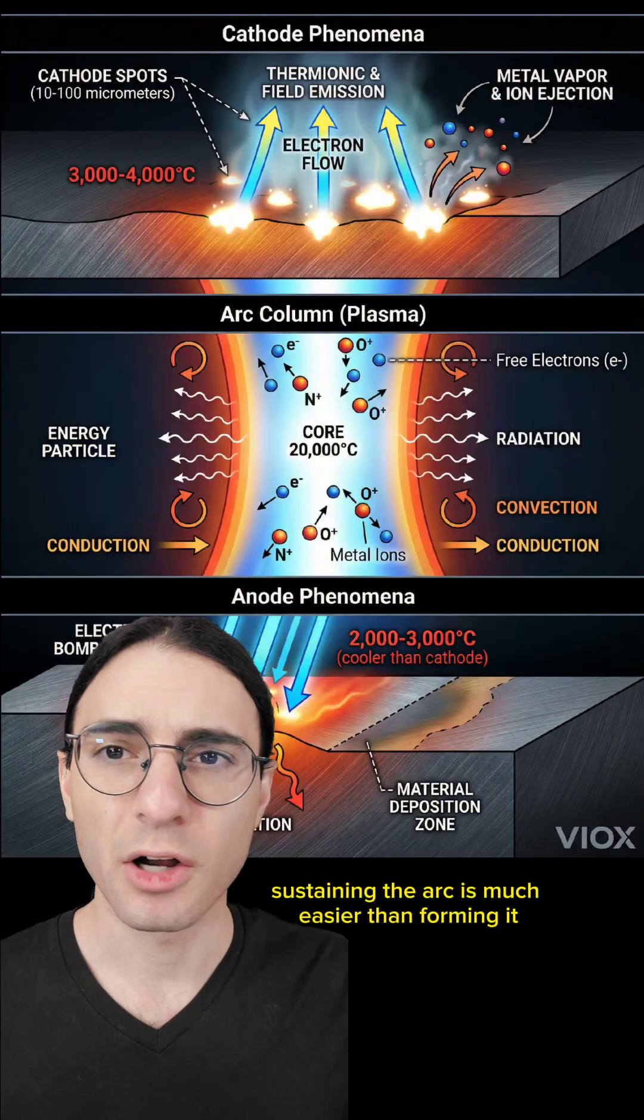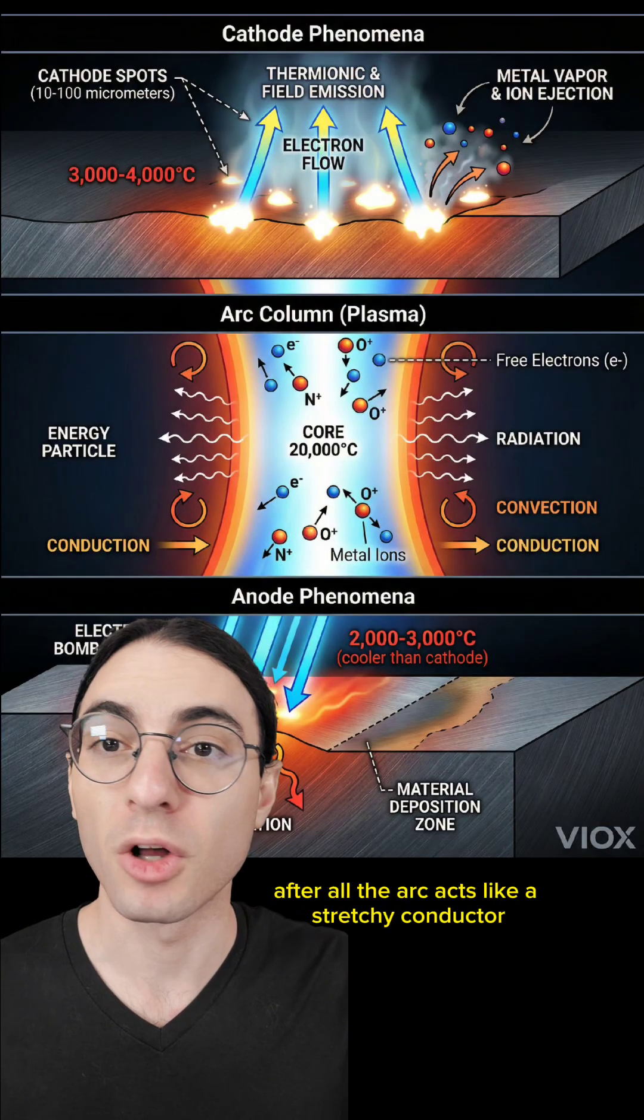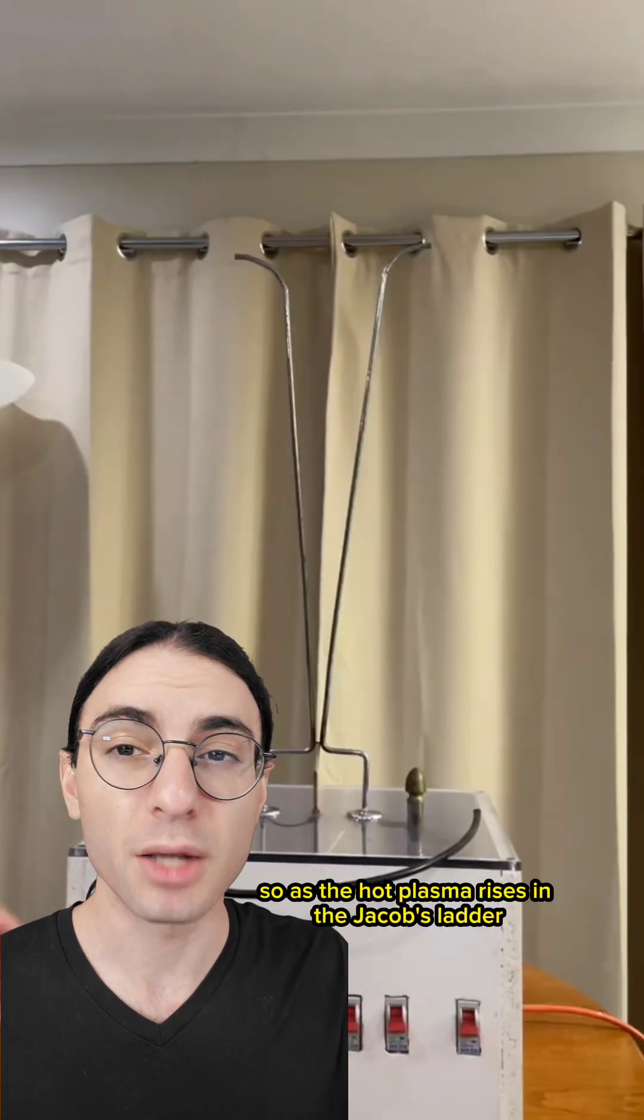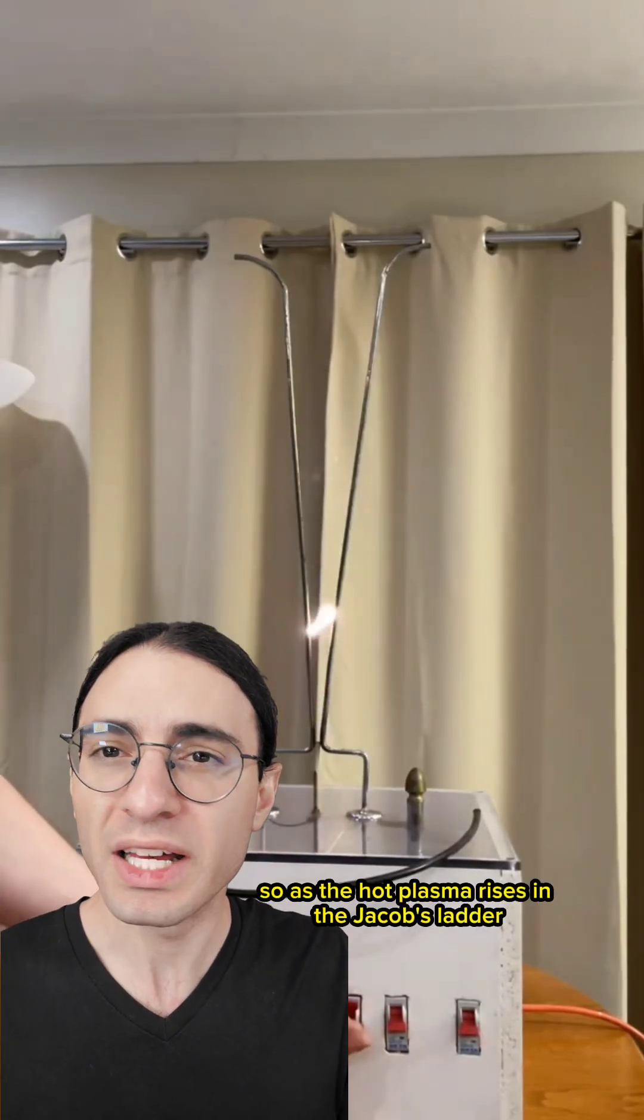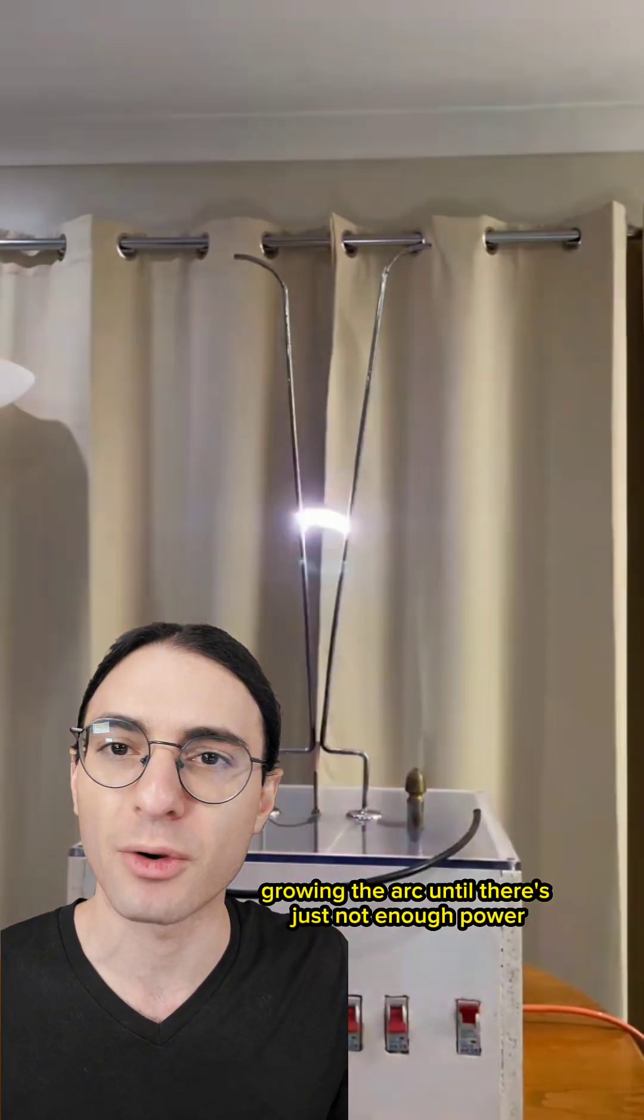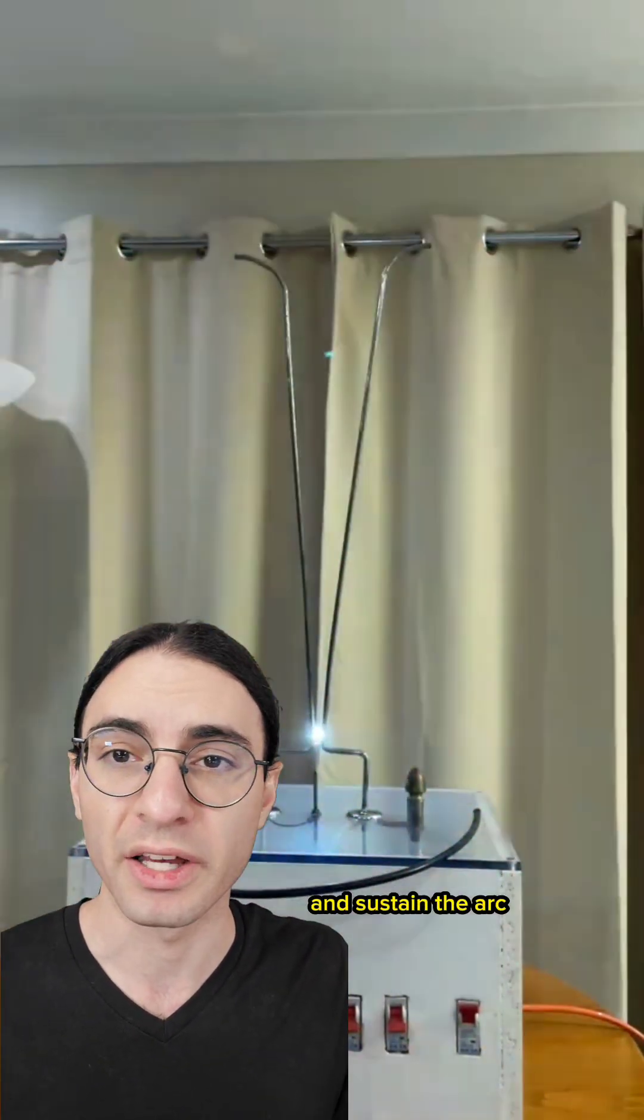Now actually sustaining the arc is much easier than forming it. After all, the arc acts like a stretchy conductor, so you don't need particularly high voltage to maintain it. So as the hot plasma rises in the Jacob's Ladder, it's able to stretch across the wider and wider gap, growing the arc until there's just not enough power to heat the air to ionization temperatures, and sustain the arc.